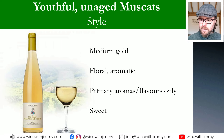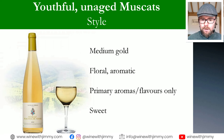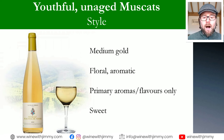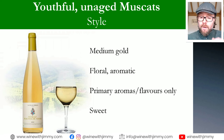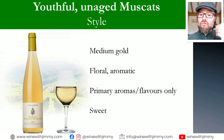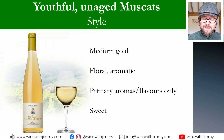Youthful, unaged muscats are typically medium gold in colour, as you'll see from the bottle of Perrin Muscat Beaumes-de-Venise and the glass on your slide. They are floral and aromatic, and the aim of both the grape growing and winemaking is to make sure that the primary characters are protected and as pure as possible — preserving those varietal primary characteristics. These are typically sweet due to the winemaking techniques, but rarely luscious.